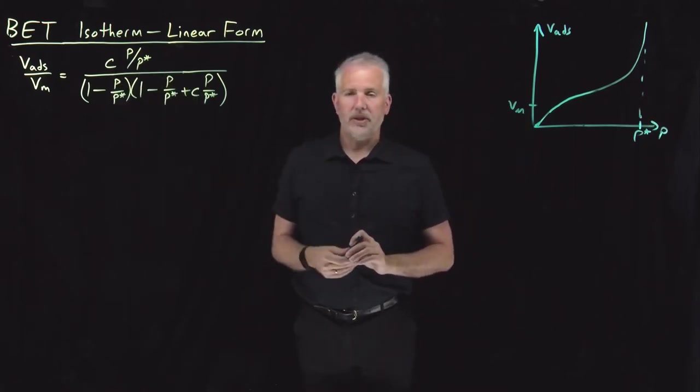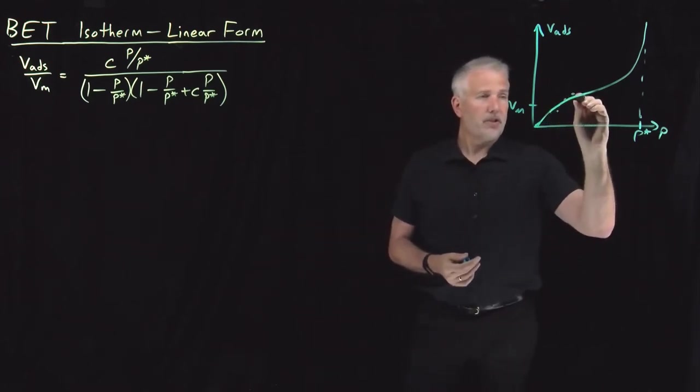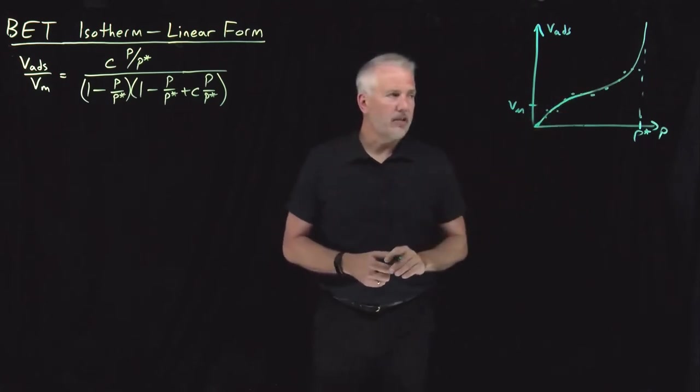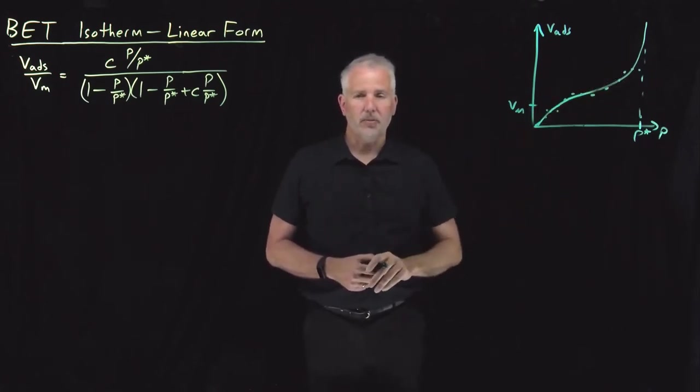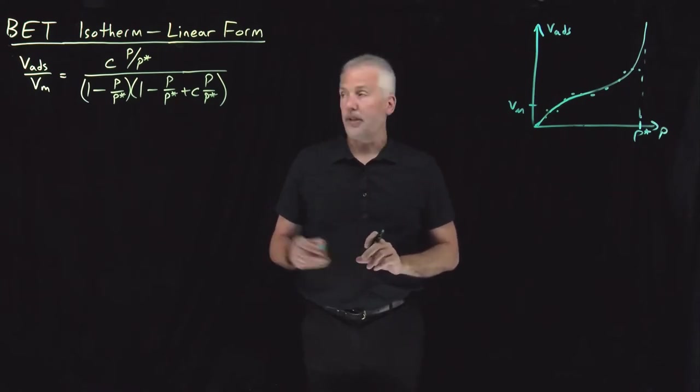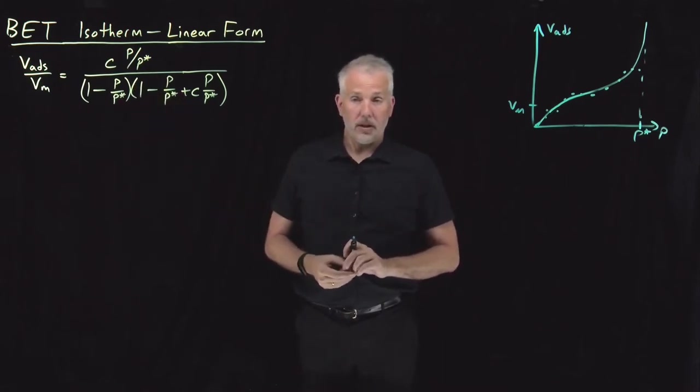Turns out we can rearrange this equation as usual to put it in a linear form so that when we're making measurements, we make experimental measurements that have some experimental error. Instead of having to fit this nonlinear expression, we can just use normal linear least squares regression to fit this equation. So our next task is to rearrange this equation and make it look like a straight line.